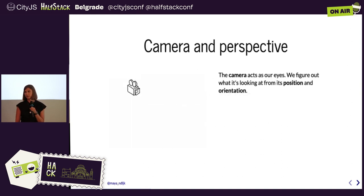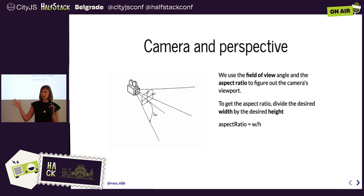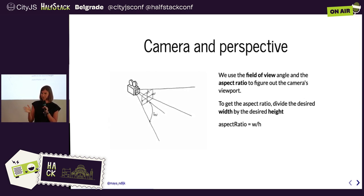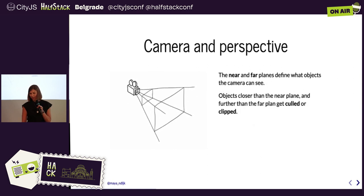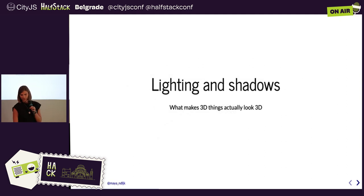Now we've got stuff and we've put it somewhere — we need to look at it. We do that with the concept of a camera, which serves as our eye in the scene. We configure it with a position and orientation, a field of view (the vertical angle of what it sees), and an aspect ratio. We also define near and far planes to cut off things too close or too far that we don't want to render.